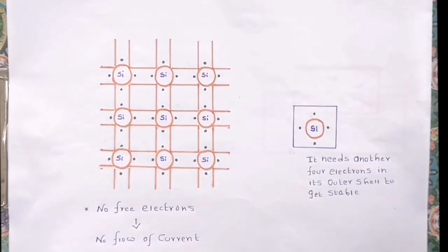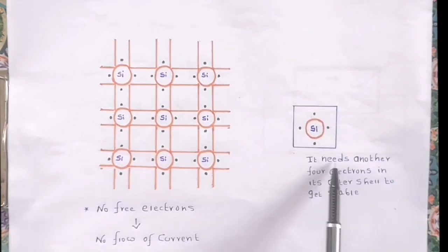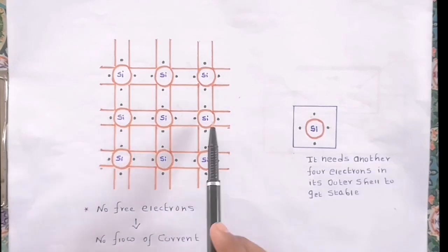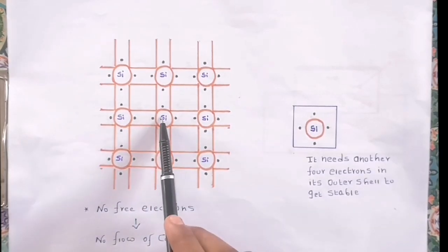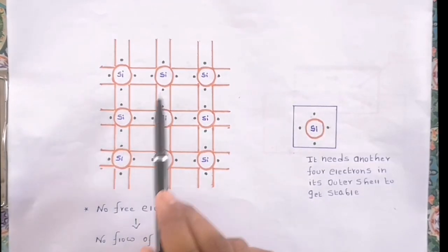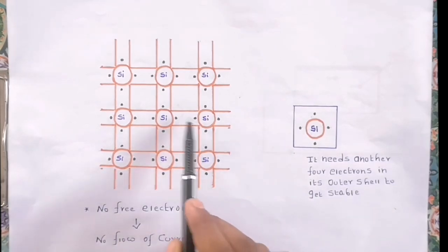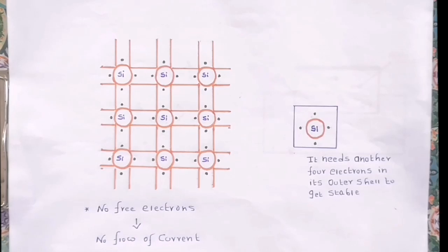Formation of this type of lattice is called pure form of semiconductors or intrinsic semiconductors. As we know, there are four electrons in the outer shell of a silicon atom, and the silicon atom needs another four electrons to get stable. It shares its electrons with neighboring silicon atoms, and the bond formed by sharing of electrons is called covalent bonds.